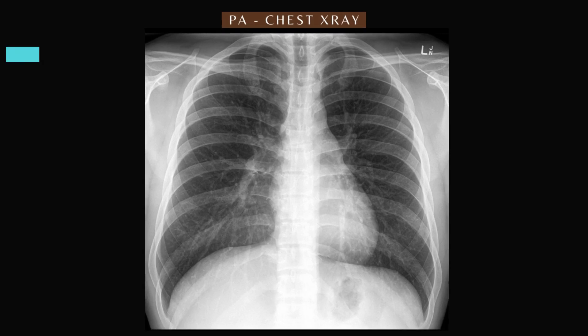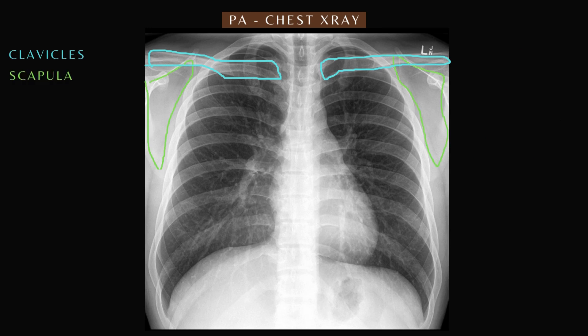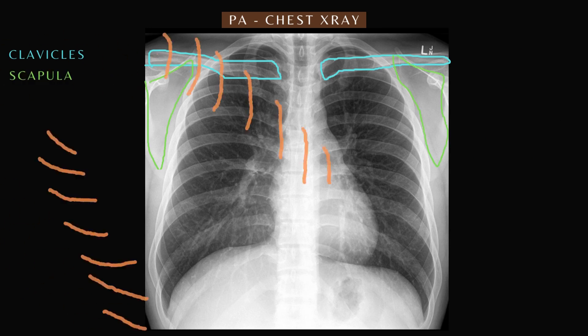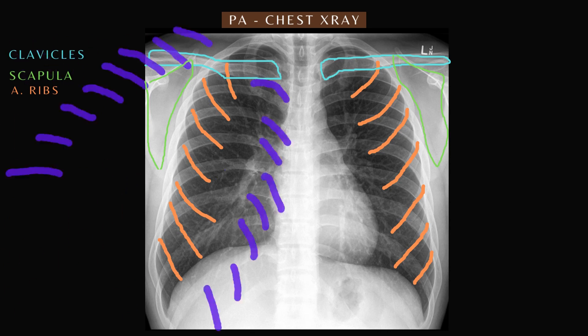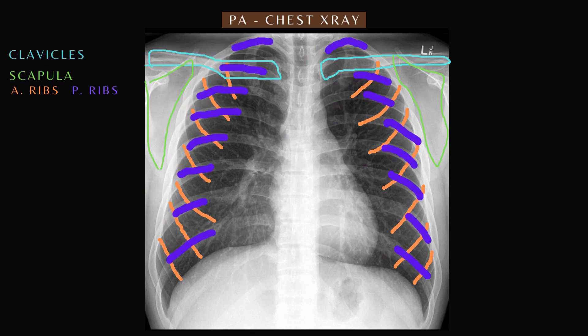First we have the clavicles, the left and right scapula, the anterior ribs, posterior ribs, and the lung fields.